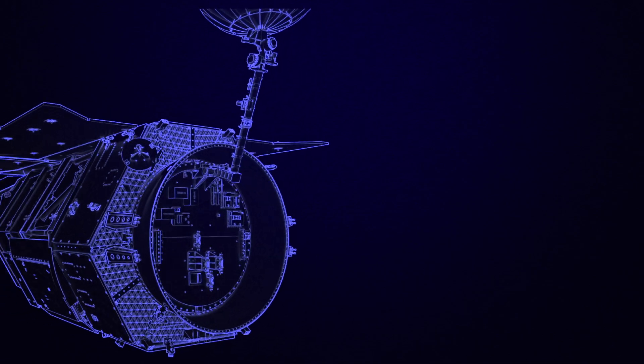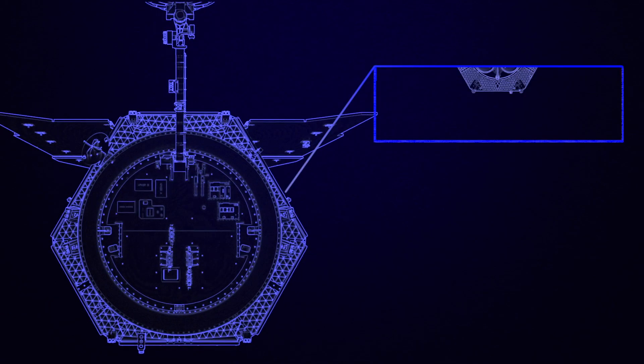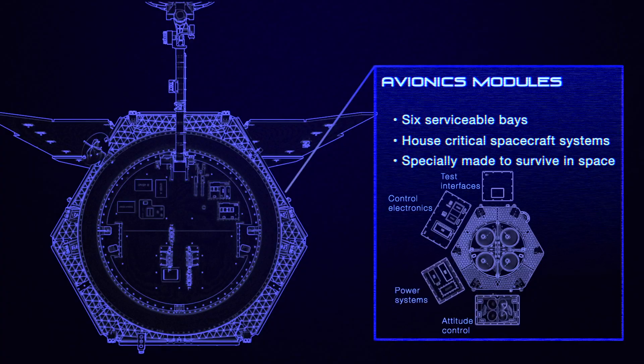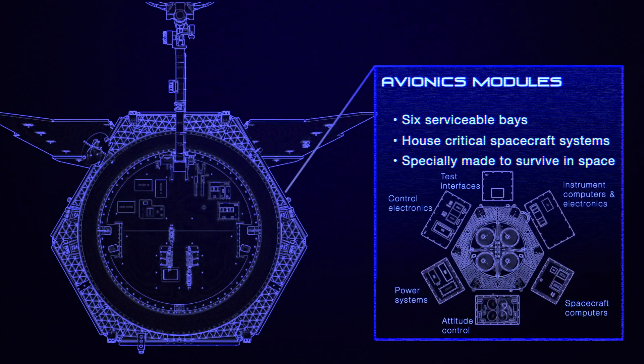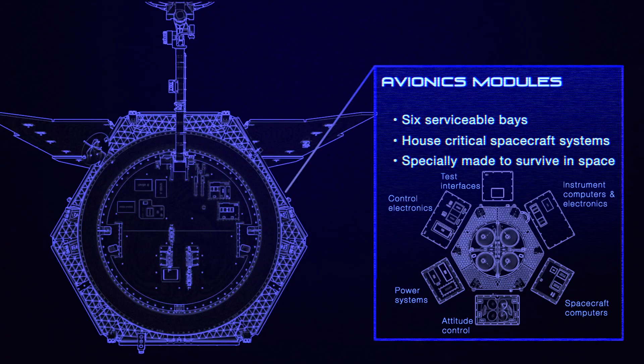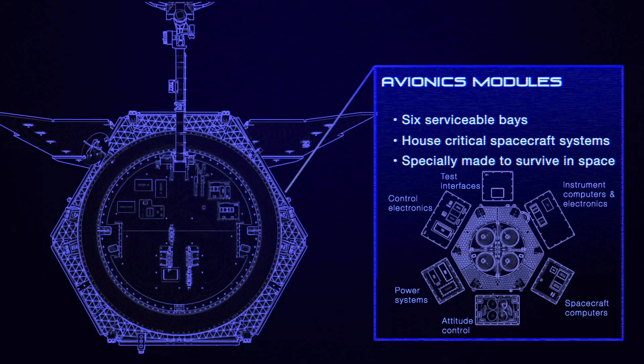Roman's critical systems, such as power and data handling, are located in six modules at the spacecraft's rear. These include six rotating reaction wheels that control where the spacecraft points, nearly one ton of propellant for larger movements, and a 10-terabyte data recorder.